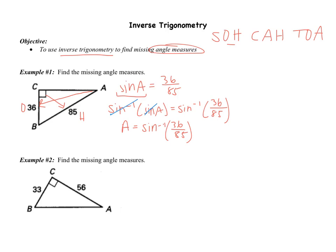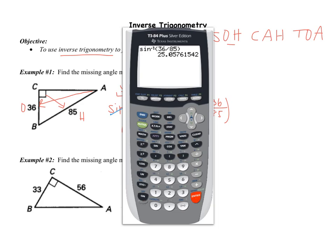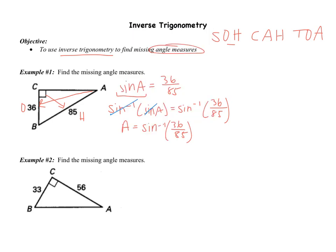Now to do this, we have to go to the calculator. So on the calculator, you're going to hit second and then sine, and you'll notice that sine negative 1 pops up. Then type 36 divided by 85, end your parentheses, and hit enter. This tells us that our angle A is 25.06 degrees. So we know that the measure of angle A is 25.06 degrees.